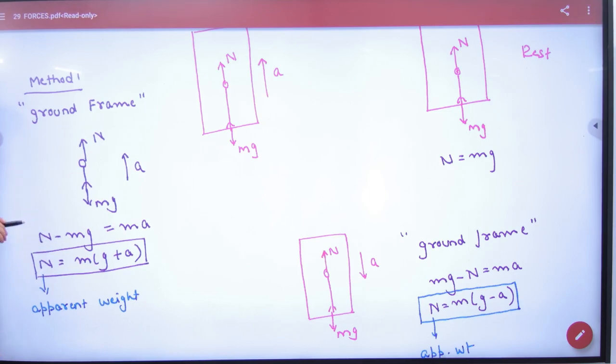So after today, if an object is going up in lift, it will not remain Mg. What will it be? It will be M(g + a).